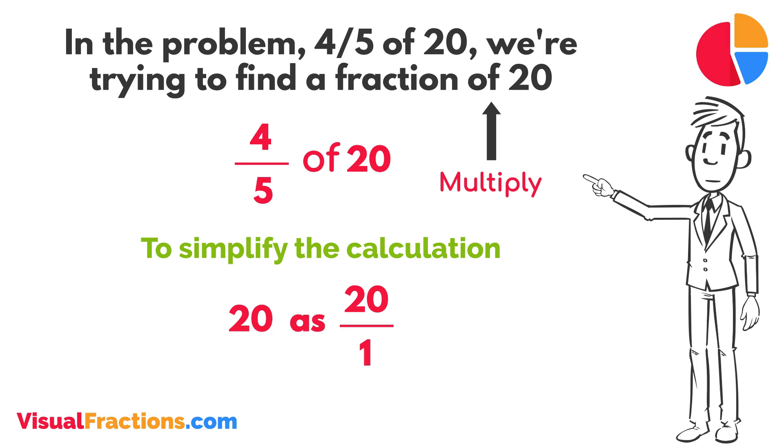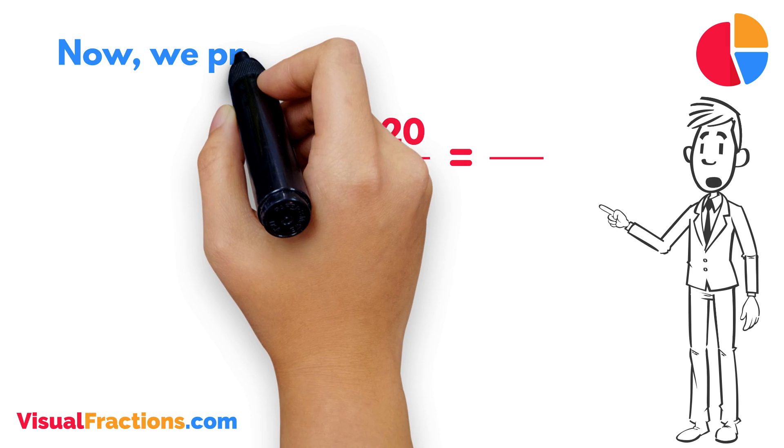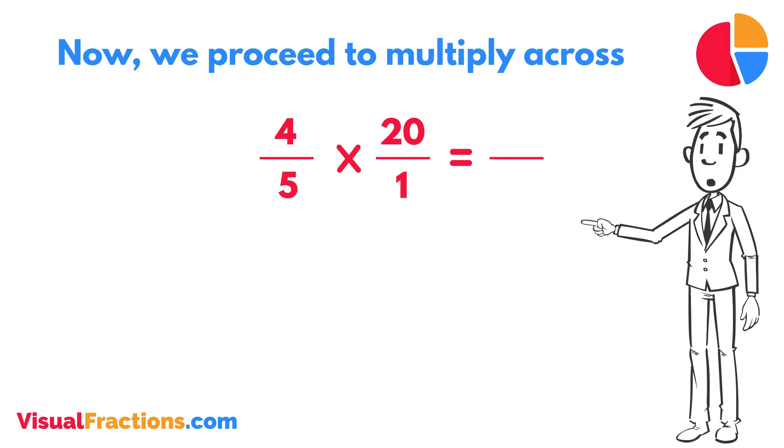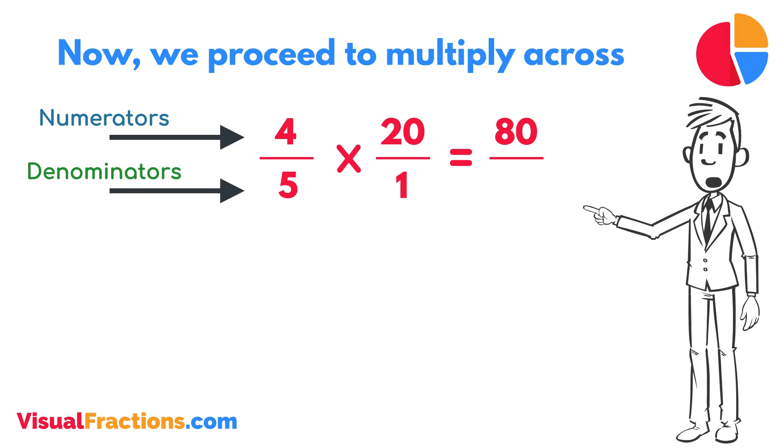This transformation makes it easier to work with our numbers as fractions. Now, we proceed to multiply across. First, multiply the numerators: 4 times 20 equals 80. Next, multiply the denominators: 1 times 5 equals 5.